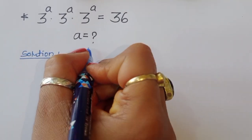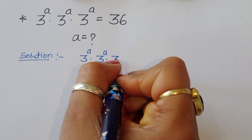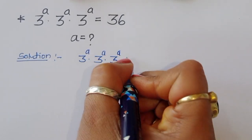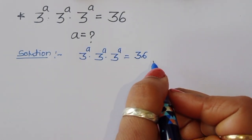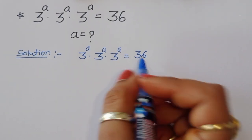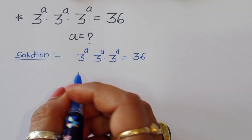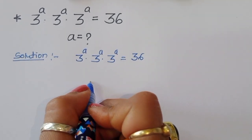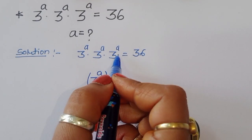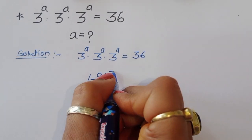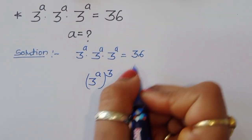3 power A times 3 power A times 3 power A is equal to 36. Now, we have three instances of 3 power A, so we can write this as 3 power A to the power 3 — because there are 1, 2, 3 of them — to the power 3 is equal to 36.